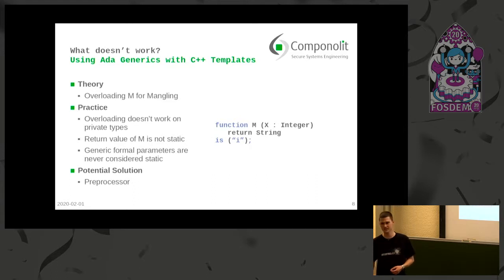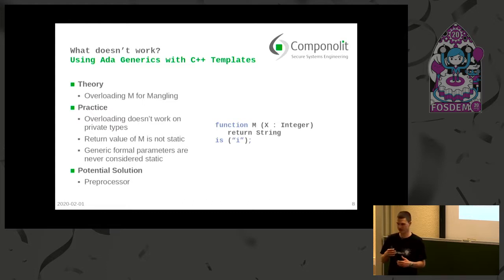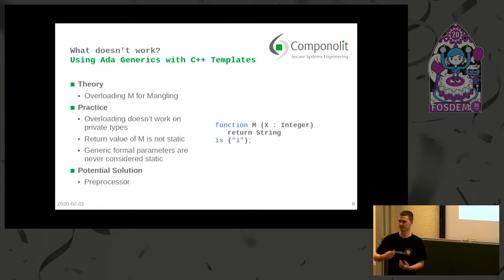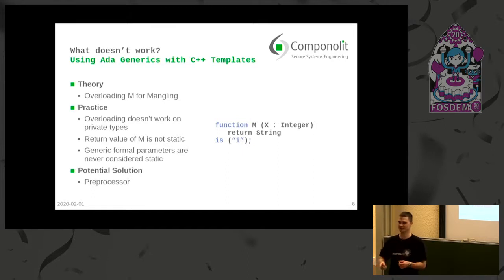The only solution would be a preprocessor. We didn't want that — Ada doesn't have one in the first place. And secondly, we wanted to make the code as SPARK-compatible as possible. If we had a preprocessor, it would be really hard to prove all the code, because depending on preprocessor options you'd only prove the part the preprocessor includes. You'd then have to make sure all preprocessor options are proven too, which would require some meta-prover. That's why a preprocessor is not an option for us.